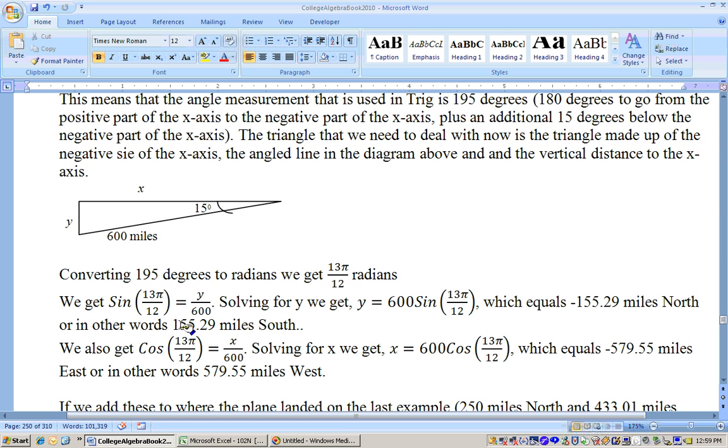We're the same as 13 pi over 12. So, the sine of this is equal to the opposite over hypotenuse. So, that would be y over 600 and multiply by the 600 and you'll get your y value. Now, that's negative 155.29. In other words, the negative tells me that I went south. So, 155.29 miles south.